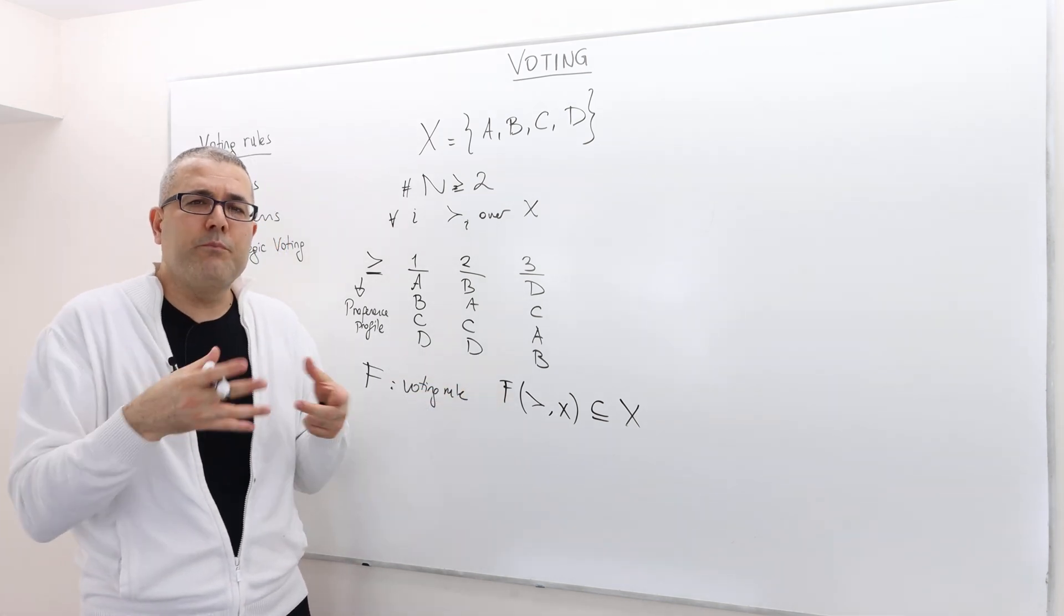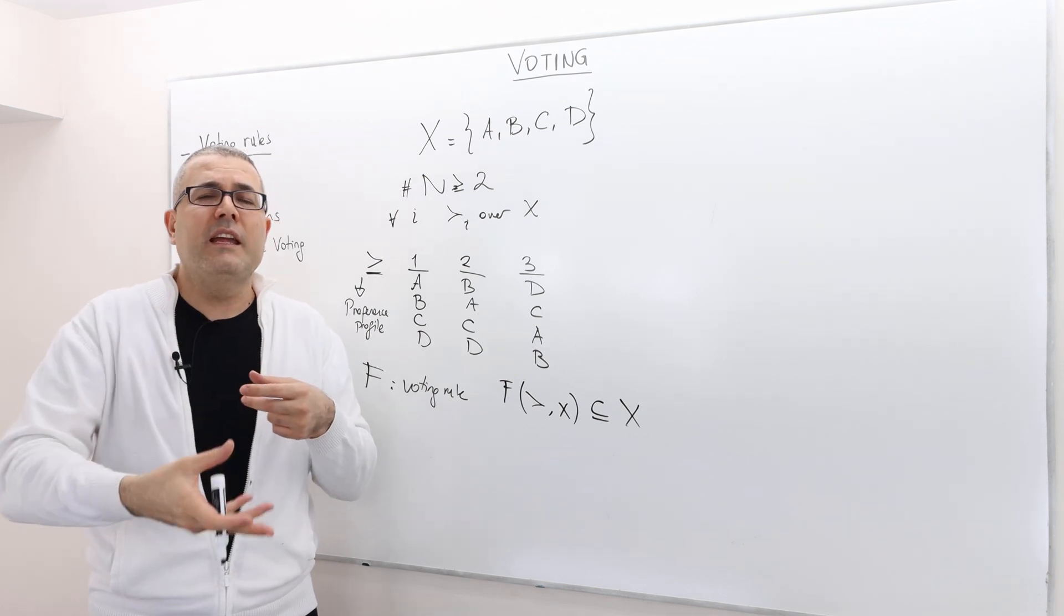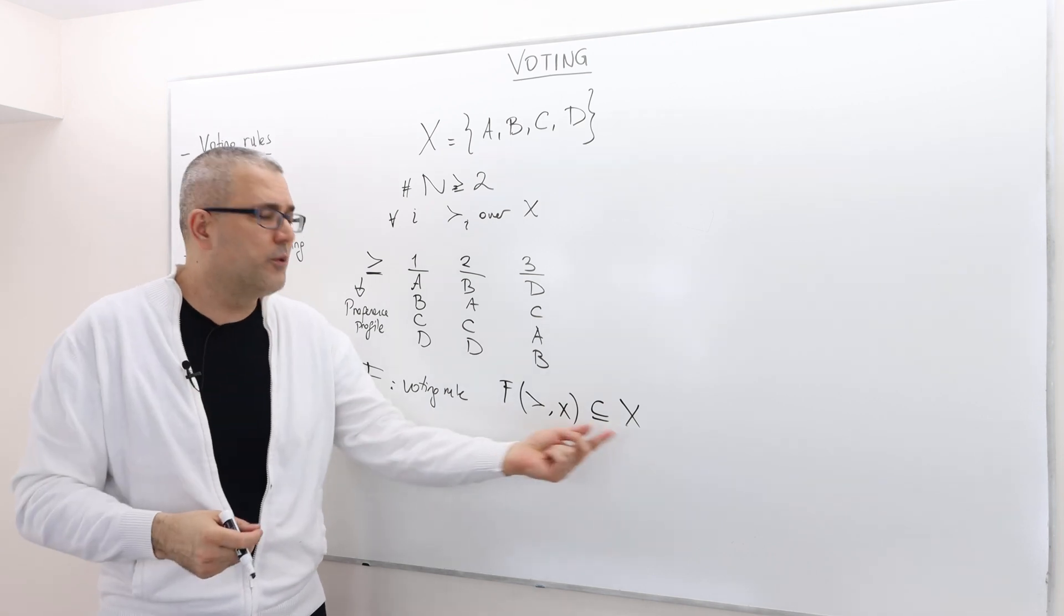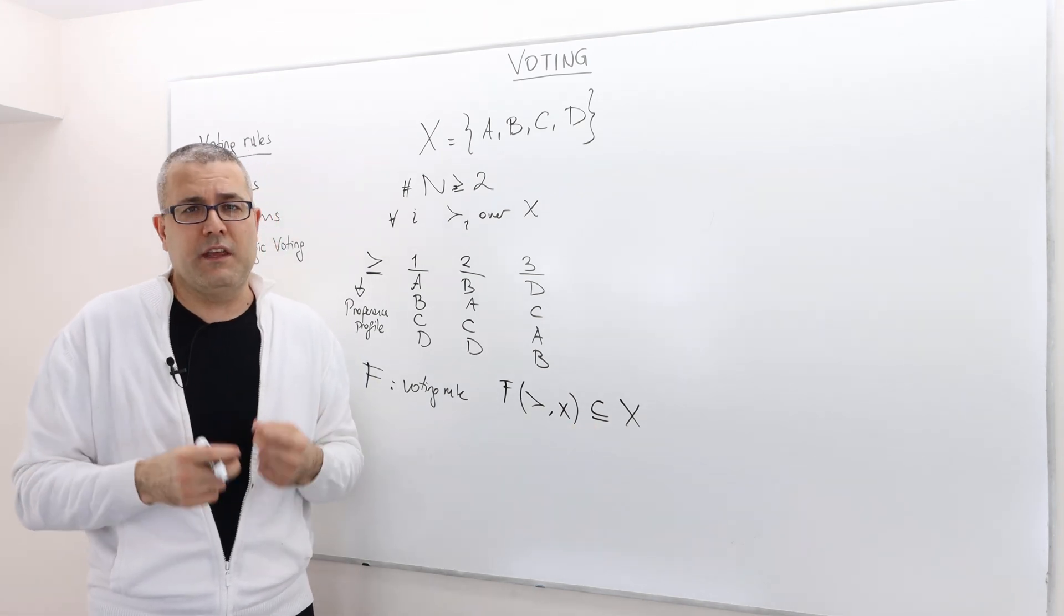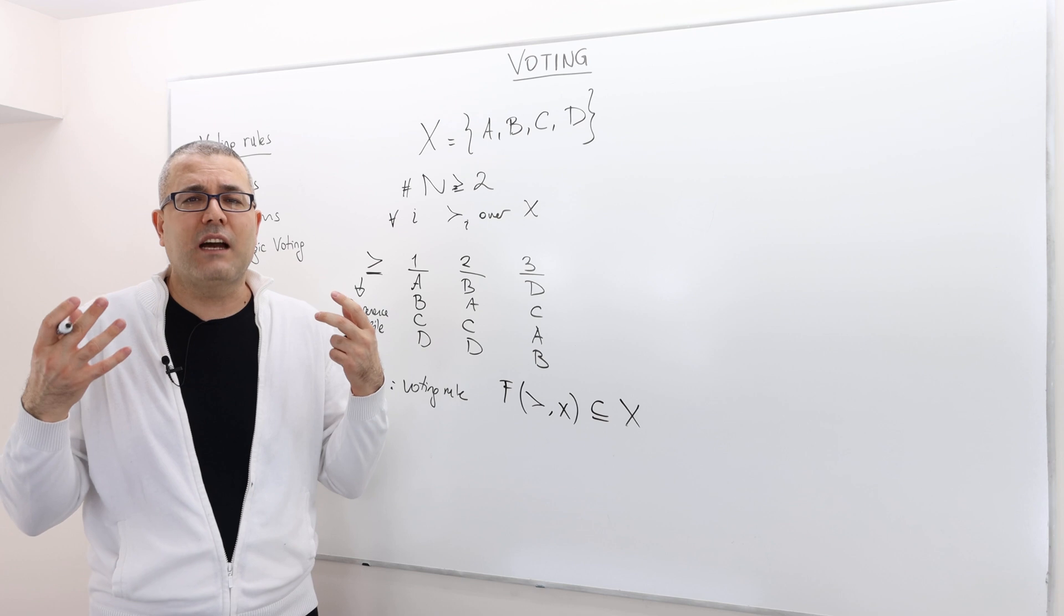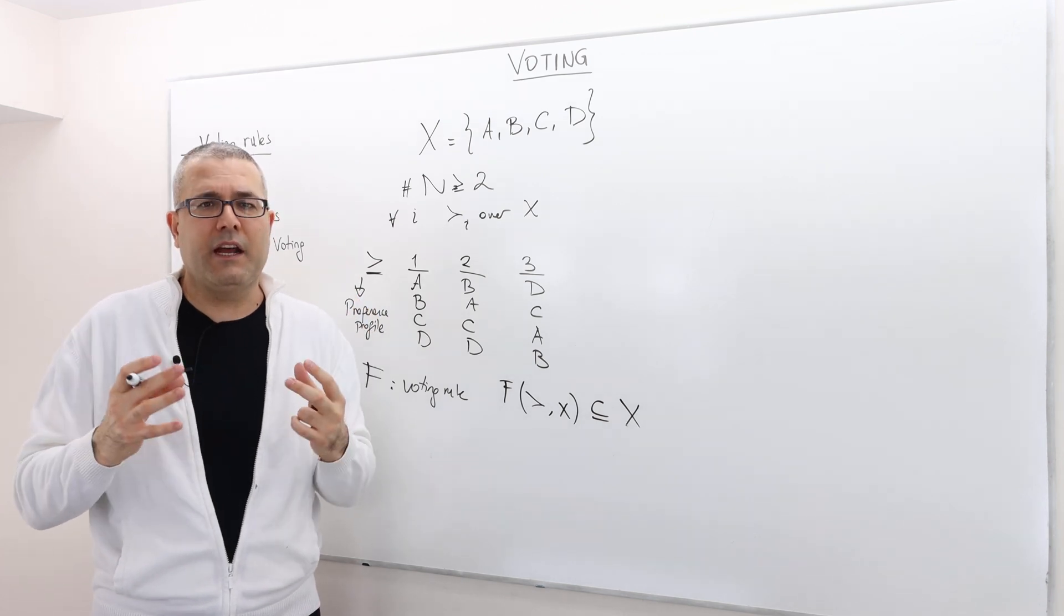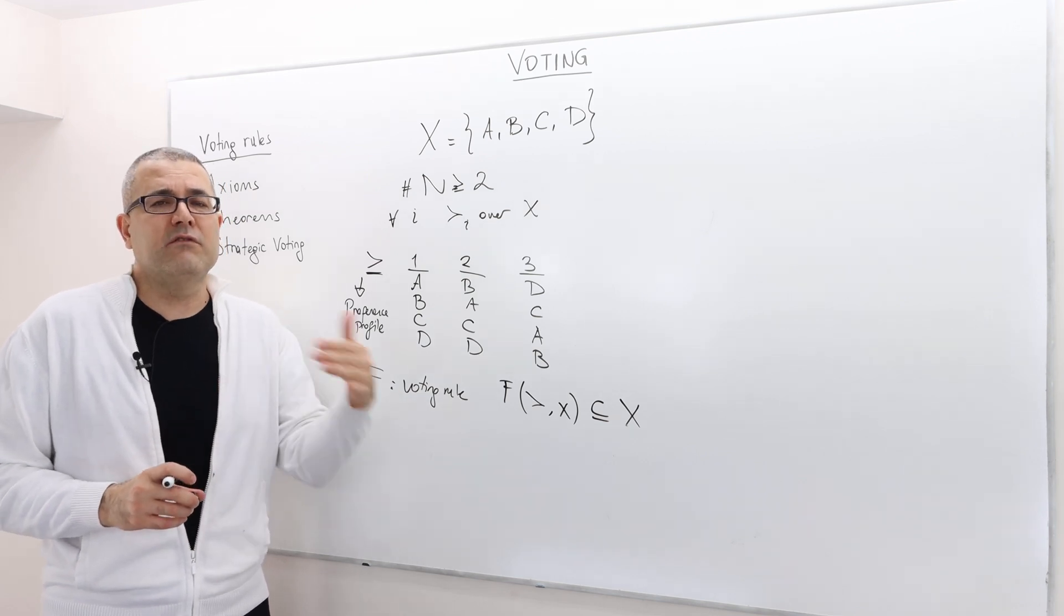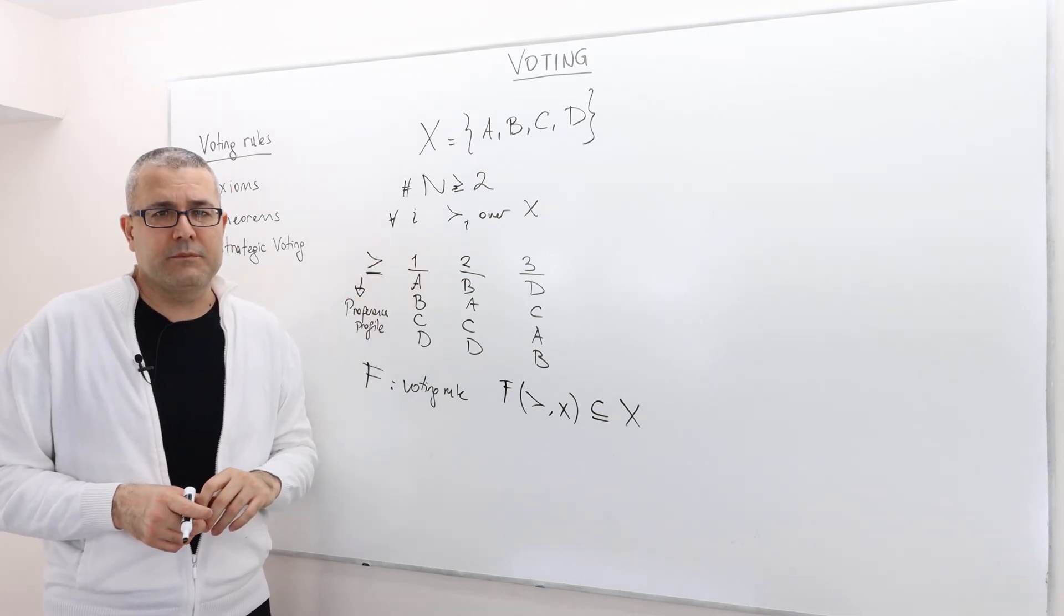The voting rule is very simple, just a function, kind of a machine. It takes the voters' preferences as input and gives an output. The outcome is just one of the alternatives. So that's our very simple setup. Now let's talk about some voting rules and see how they react in different circumstances.